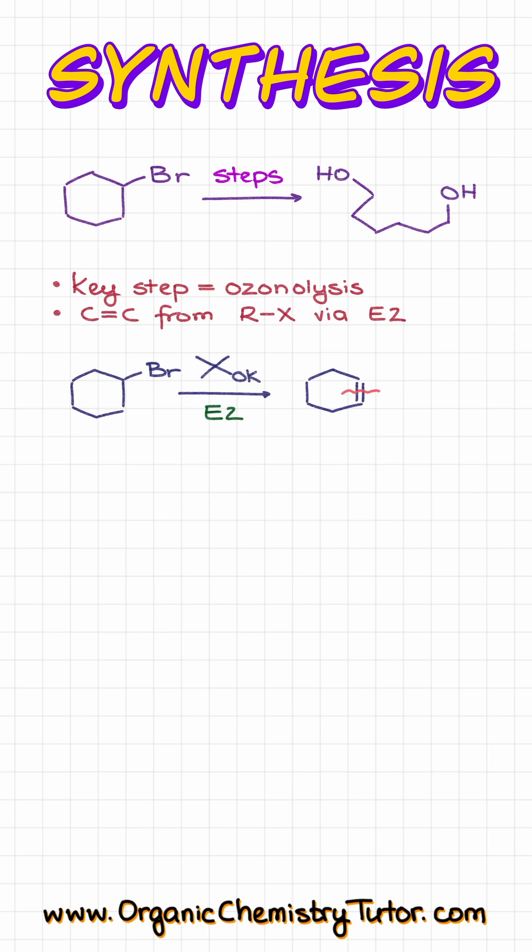Now, in order to cut through this double bond over here, we're going to do step one of ozonolysis, which is the reaction with O3, followed by the workup, like DMS or zinc and acid, cutting through our double bond and giving us the following dialdehyde.